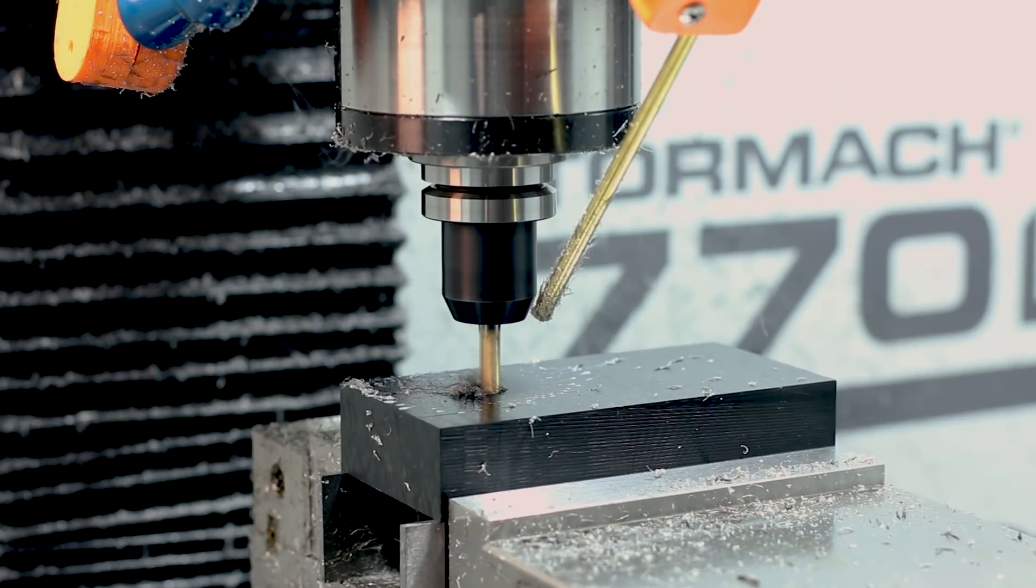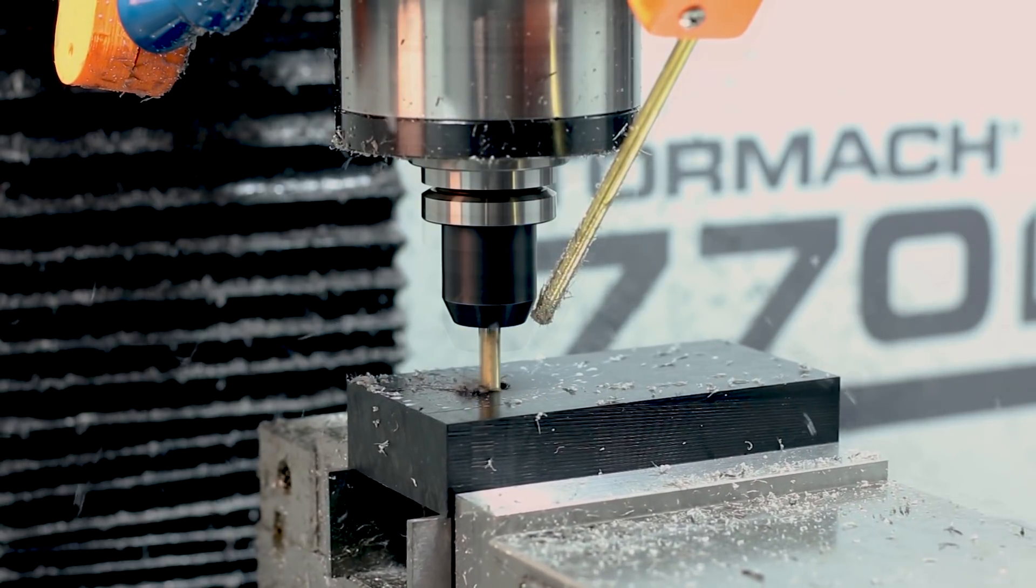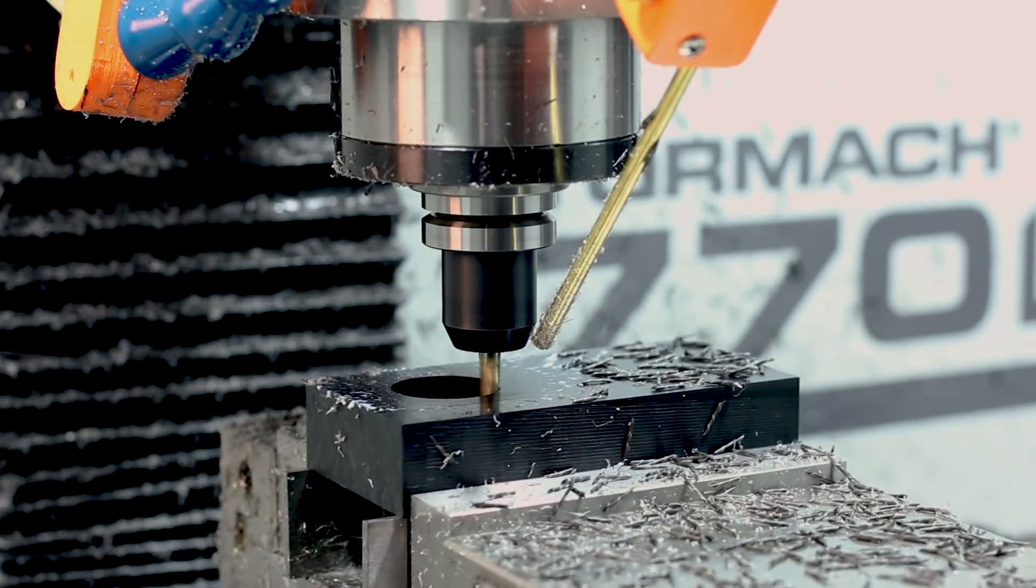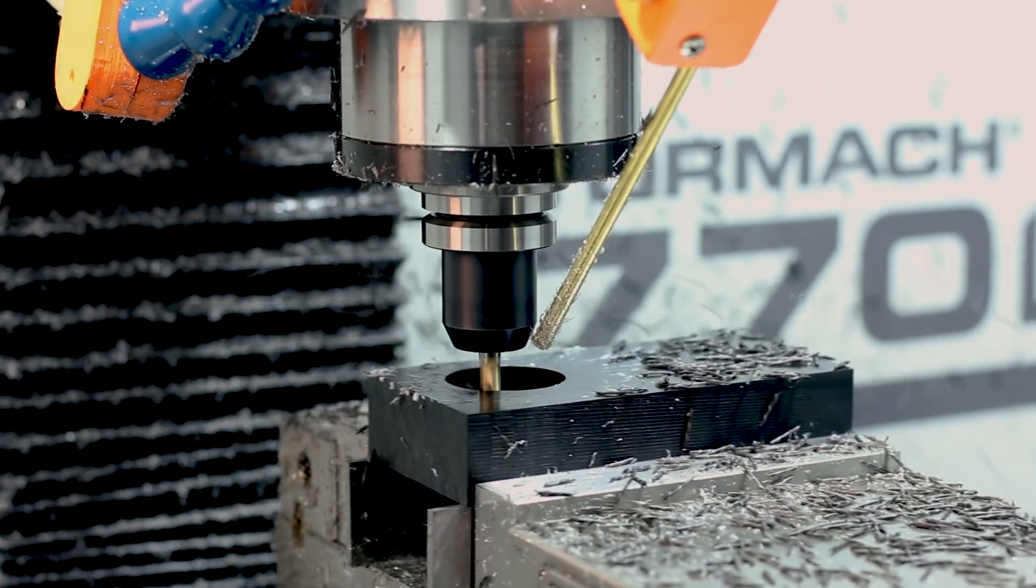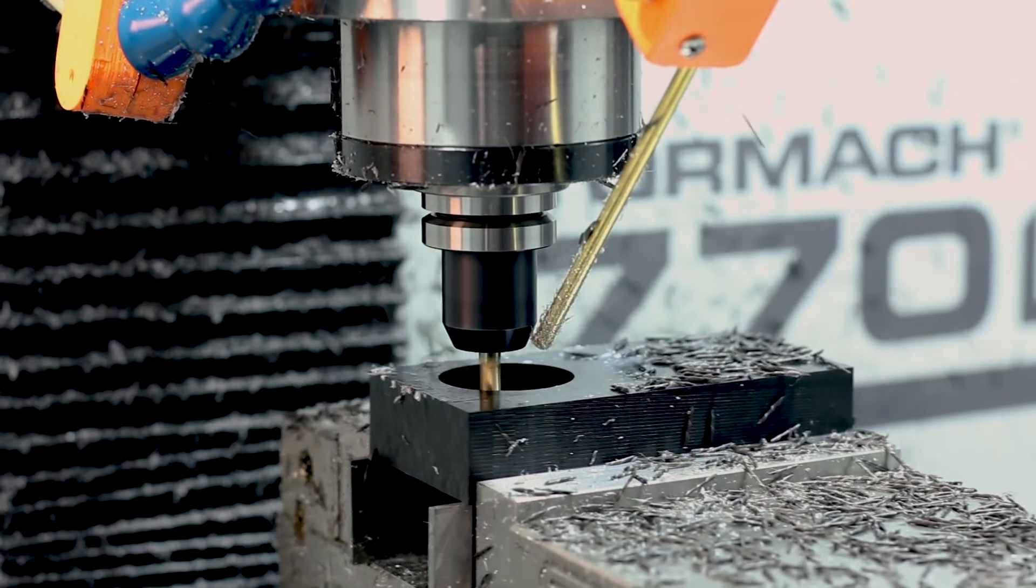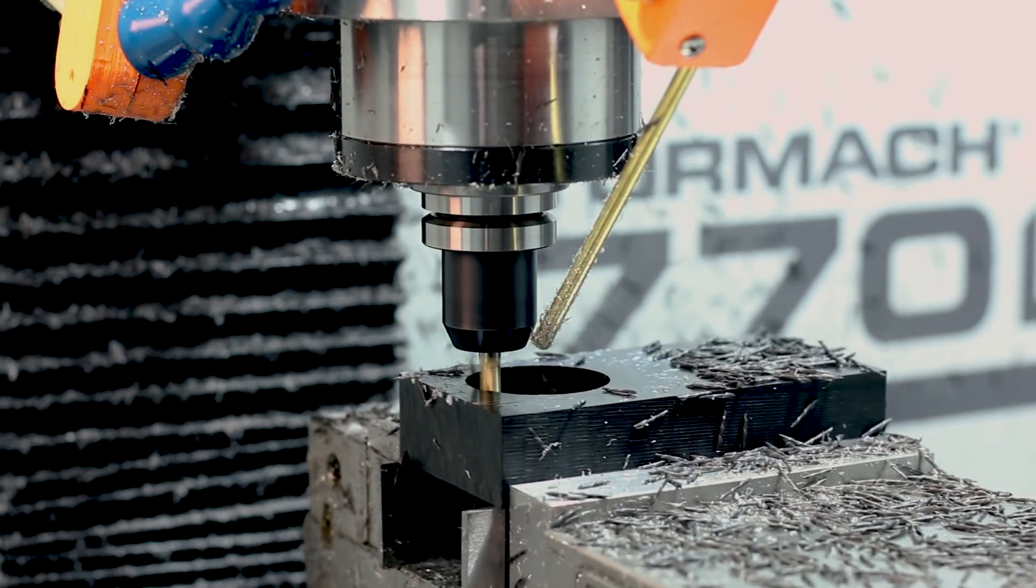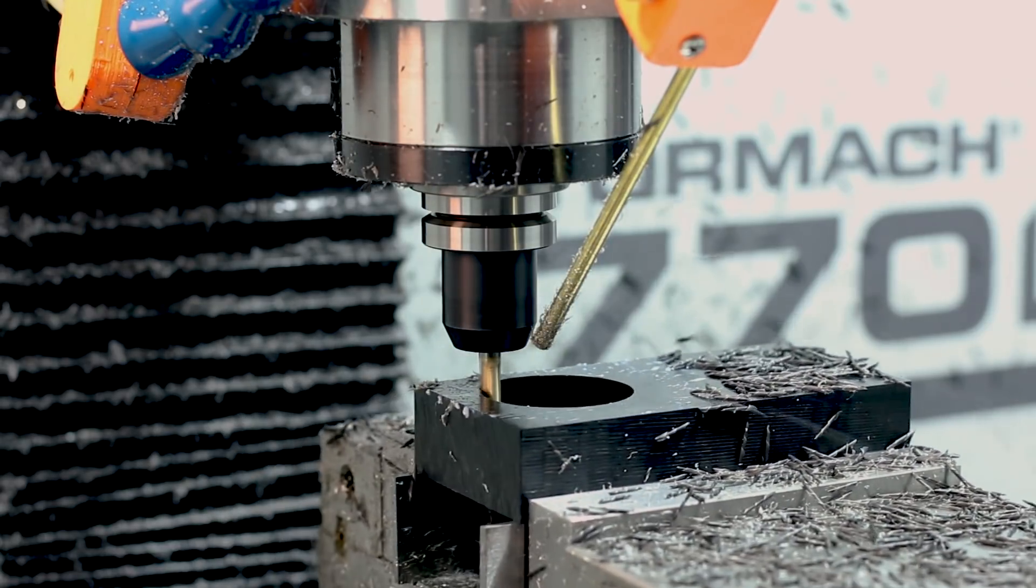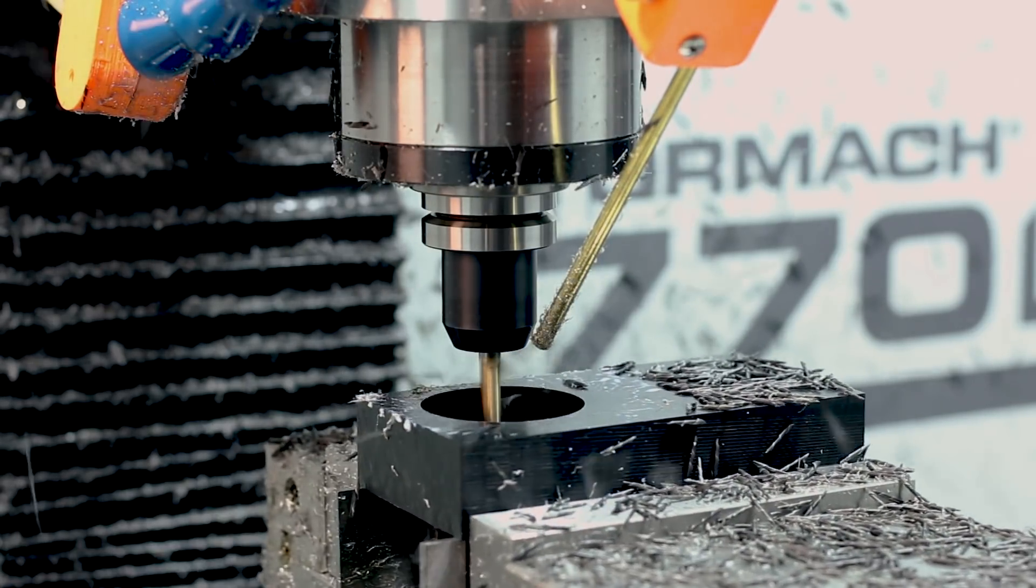You want to be moving fast enough that you're not just melting the plastic as the tool moves through it, because that'll gum up your tool and leave a really bad burr and just melted plastic everywhere. But you also don't want to be moving so fast that the tool is tearing the plastic, because this will leave a bad surface finish and leave you with more to deburr.